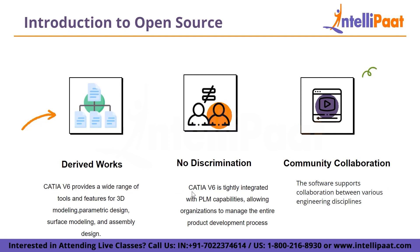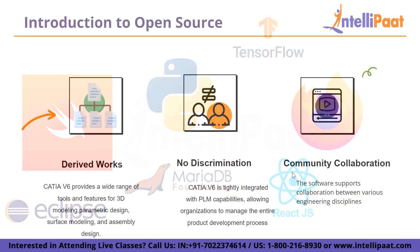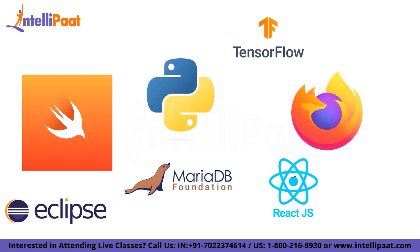Next comes derived works — open source licenses often permit the creation of derivative works, which are new projects or versions built upon the original open source work. Then there is no discrimination: open source licenses generally do not discriminate against any person or group, and do not restrict usage based on factors such as race, religion or field of endeavour. Next is community collaboration: open source projects often have a community of developers and users who collaborate to improve the software, leading to rapid development and high quality. Popular open source licenses include GNU General Public License, MIT license, Apache license, and Creative Commons licenses for non-software works like art, literature and music.